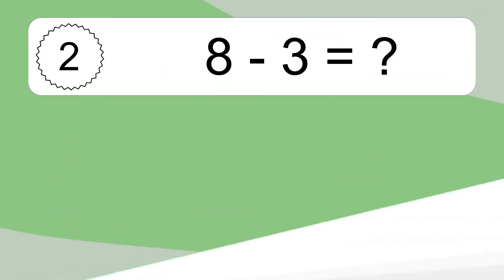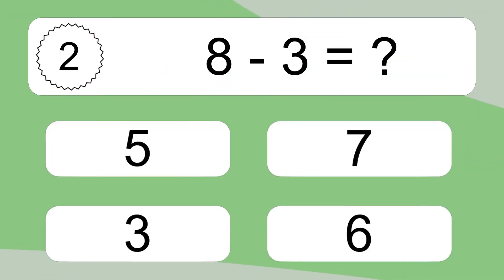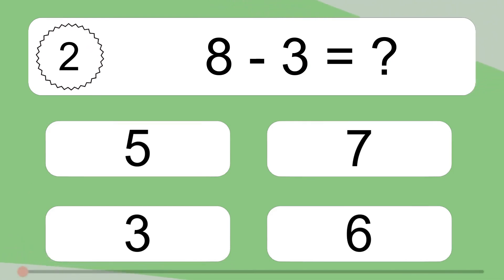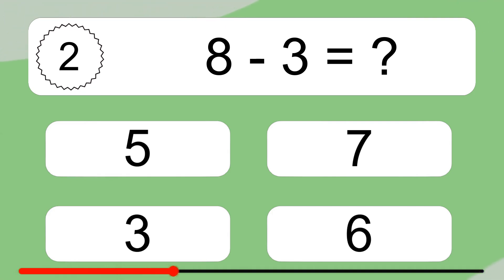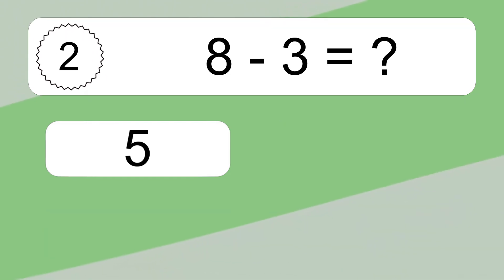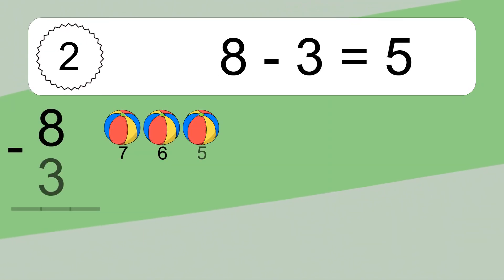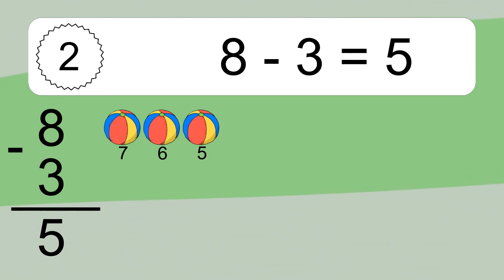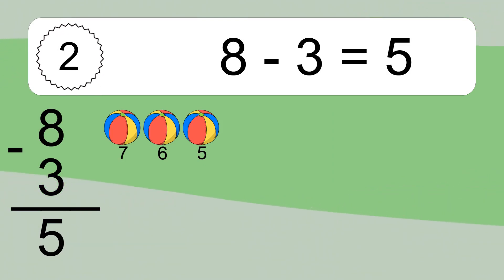8 minus 3 equals what? 8 minus 3 equals 5. Let's count it. 7, 6, 5.